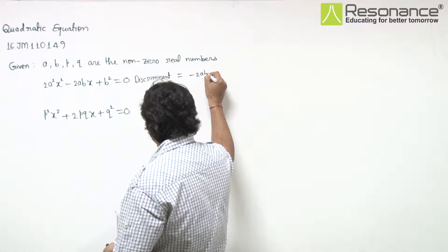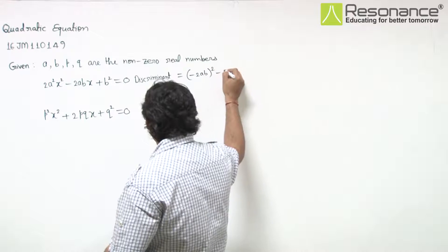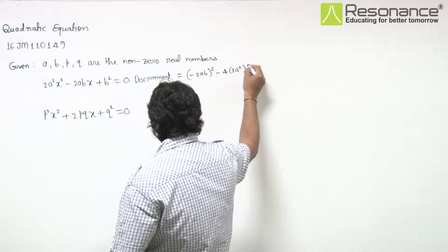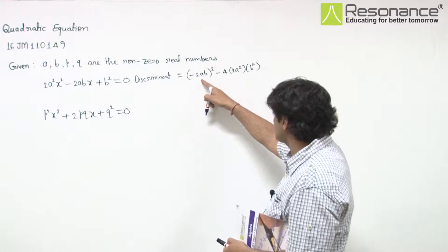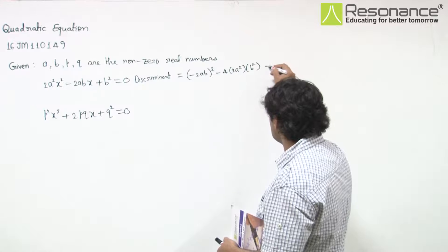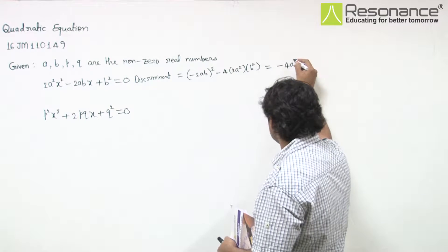b² - 4ac, that is 4a²b² - 8a²b², which equals -4a²b².